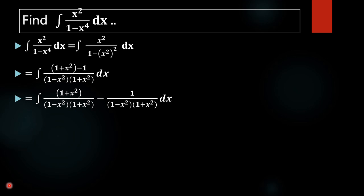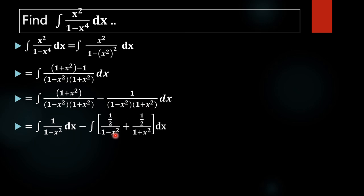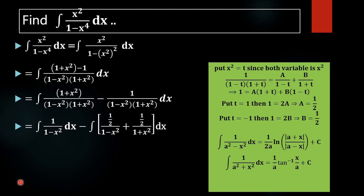Then in the next step we are rearranging this as one half times 1 over 1 minus x squared dx, plus one half times 1 over 1 plus x squared dx. How we are doing this is by using partial fractions — that is, we are putting the value of x squared equal to t.